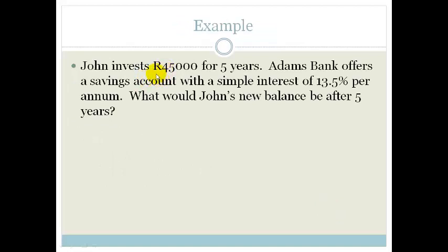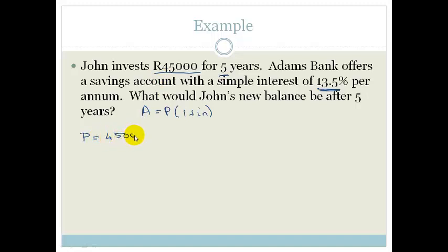Let's do an example. John invests 45,000 Rand for 5 years. Adams Bank offers a savings account with simple interest of 13.5% per annum. What would John's new balance be after 5 years? Our formula is A equals P(1 plus IN). The principal is 45,000. The number of years is 5, and since we are being paid per annum, N is just 5. I is 13.5 divided by 100, which is 0.135.